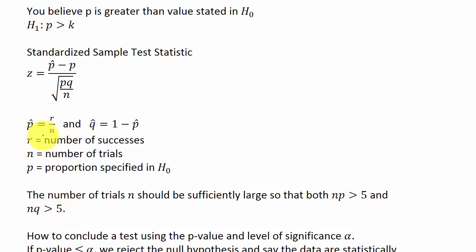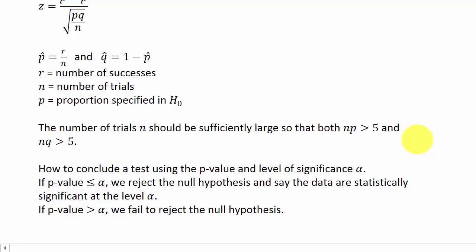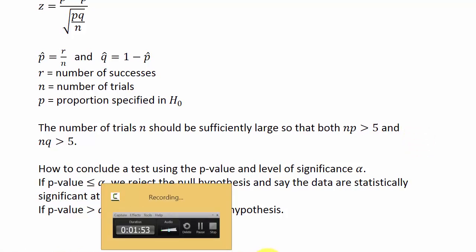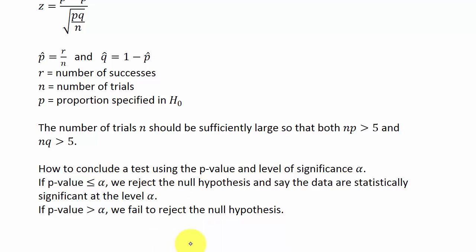R being the number of successes will be explained further in the problem. Now, how to conclude a test using the P-value and level of significance alpha — usually 1% or 5%. If the P-value is less than or equal to alpha, we reject the null hypothesis and say the data are statistically significant at level alpha. If the P-value is greater than alpha, we fail to reject the null hypothesis.